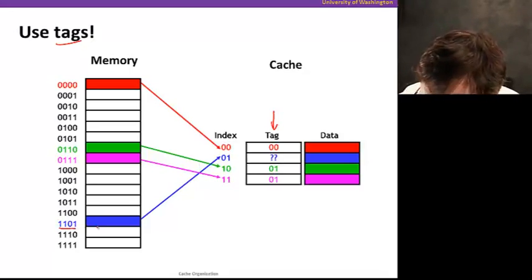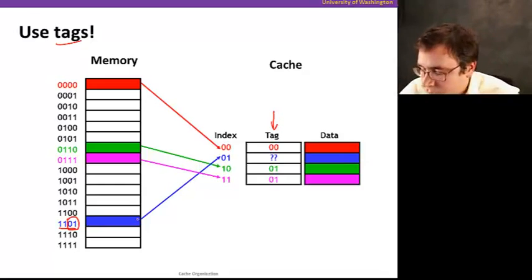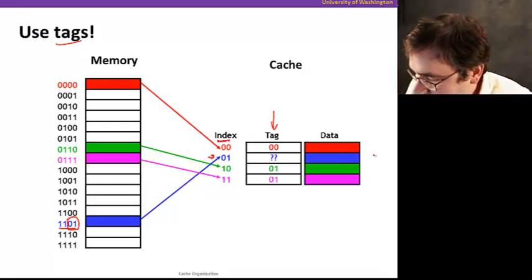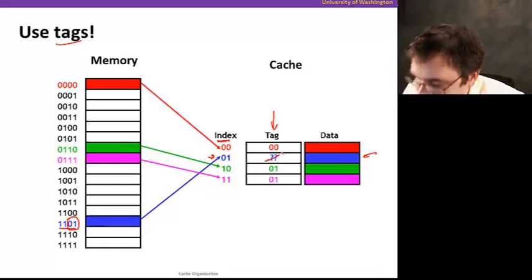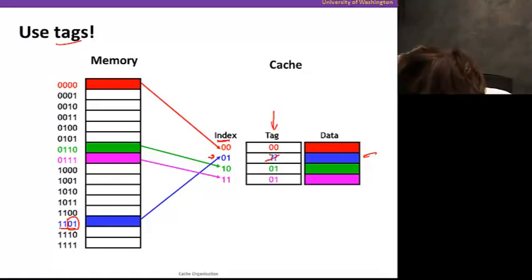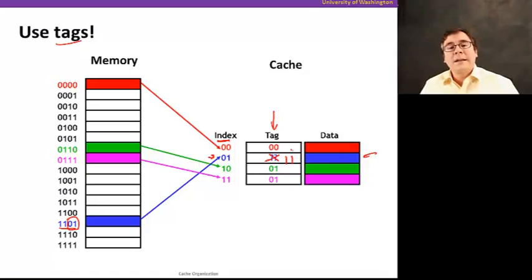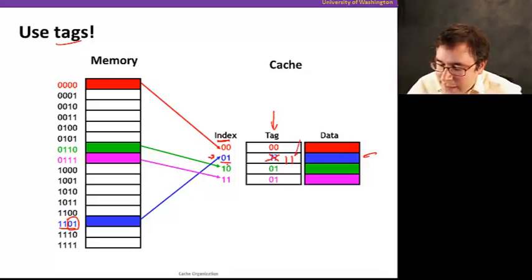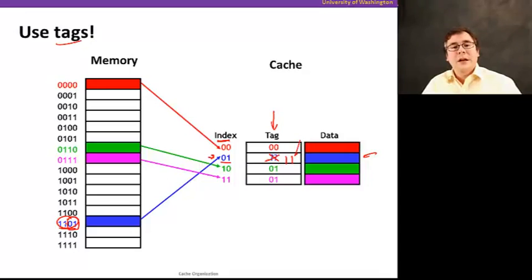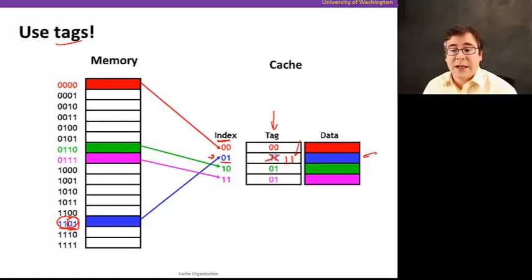For example, say address 1101 maps to a particular cache index based on its lower two bits. We store the upper bits — tag 11 — alongside the data. Now the tag together with the index tells us exactly which address is stored in the cache, so there's no confusion when multiple memory addresses map to the same cache position.